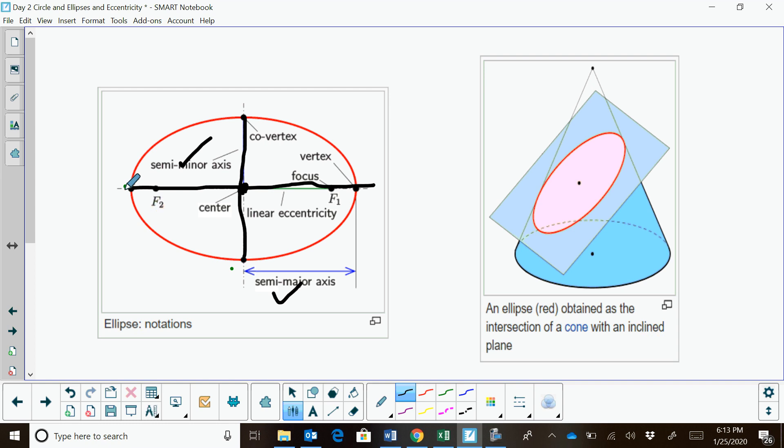Then you've got what are called vertices. Vertices are the points at the end of your major axis. Co-vertices are the points at the end of your minor axis. Of course, you have a center, and then you have these things called foci. There's two foci in each ellipse, and the distance between these two foci creates this ellipse. And that's the parts of an ellipse.